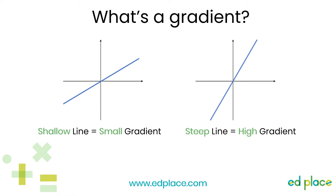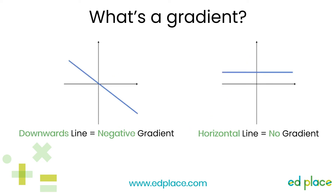In this first example, we have a shallow line, which means the value of the gradient will be small. And in the second example, the line is steep, which means the value of the gradient will be high. In this next example, the line is going downwards, so the gradient will be negative. In this final example, the line is horizontal, which means there's no gradient.